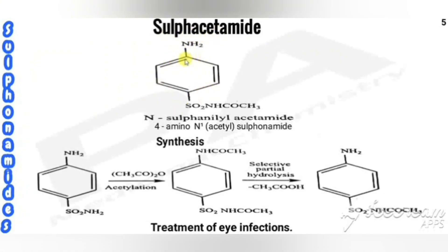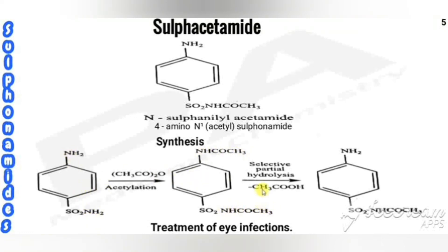This drug is called sulfacetamide. In sulfacetamide, an acetyl group (CO) is added to the sulfanilamide group. Its chemical name is N-sulfanilacetamide, otherwise 4-amino-N1-acetylbenzenesulfonamide. For the synthesis, the starting material is sulfanilamide, which undergoes acetylation using acetic anhydride.